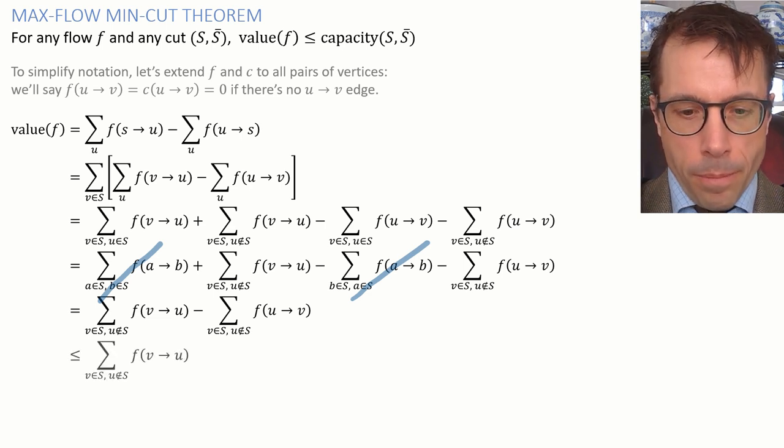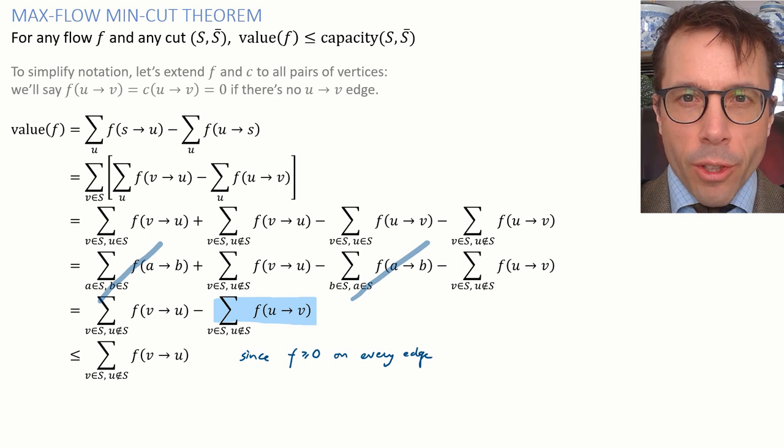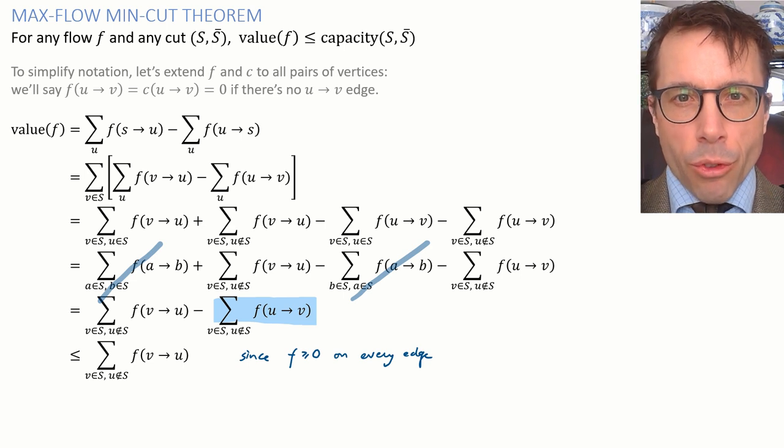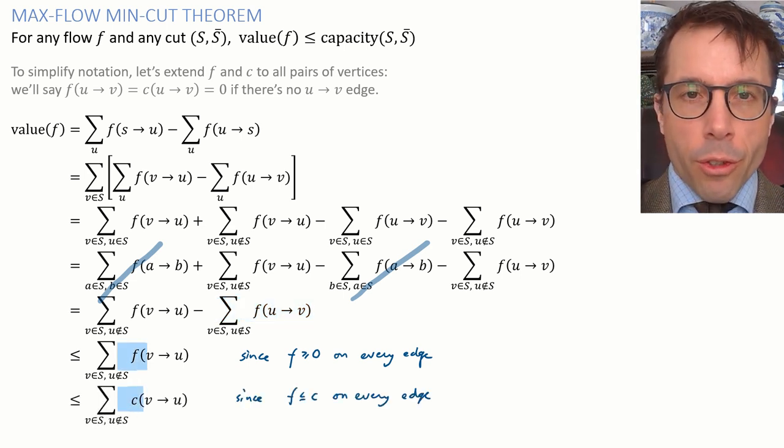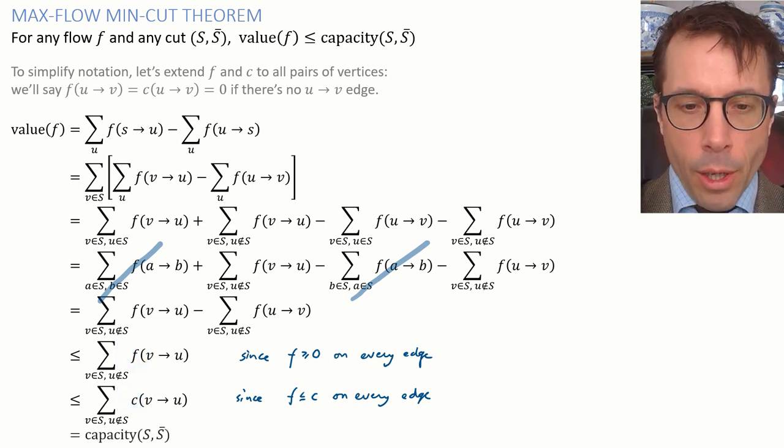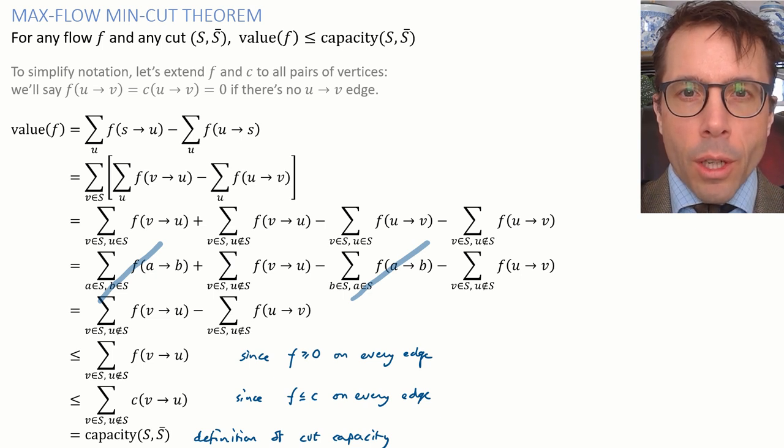And now we're nearly done. The expression that we've found is less than or equal to the first term, because the second term is above or equal to zero, seeing as flows have to be above or equal to zero on each edge. And similarly, the flow on each edge is less than or equal to capacity, which gives us this inequality. And hey presto, we're left with the definition of cut capacity, QED. We've proved our theorem.